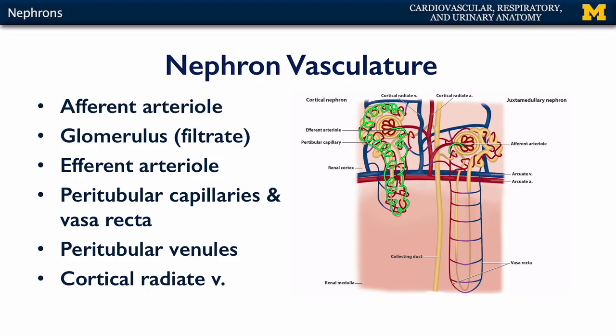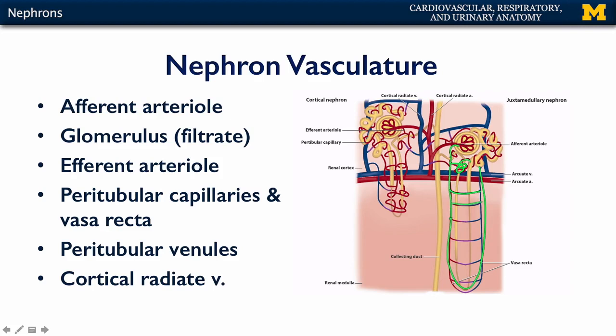These peritubular capillaries surround the entirety of the proximal convoluted tubule, the nephron loop, and the distal convoluted tubule. There's going to be reabsorption of materials from the filtrate back into the cardiovascular system, and secretion of materials from the cardiovascular system back into the filtrate. For juxtamedullary nephrons, coming off the efferent arterioles from the glomerulus, not only do we have the peritubular capillaries, but we also have something known as the vasa recta — straight vessels that surround the nephron loop.